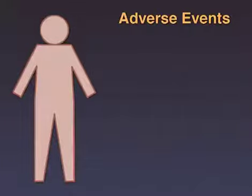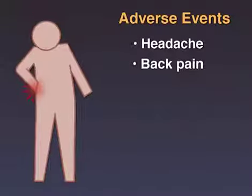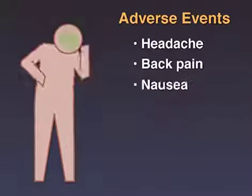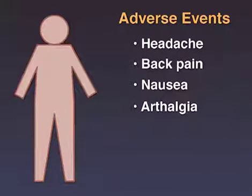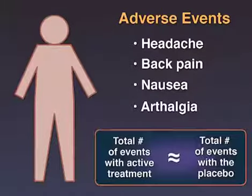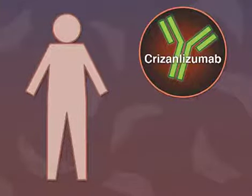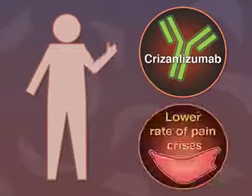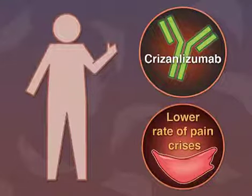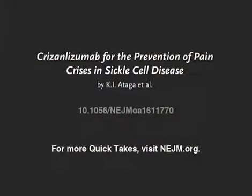The majority of patients reported at least one adverse event, including headache, back pain, nausea, and arthralgias, but adverse events were no more frequent with active treatment than with placebo. The authors conclude that treatment with the P-selectin inhibitor crizanlizumab significantly reduced the frequency of sickle cell-related pain crises. Full trial results are available at NEJM.org.